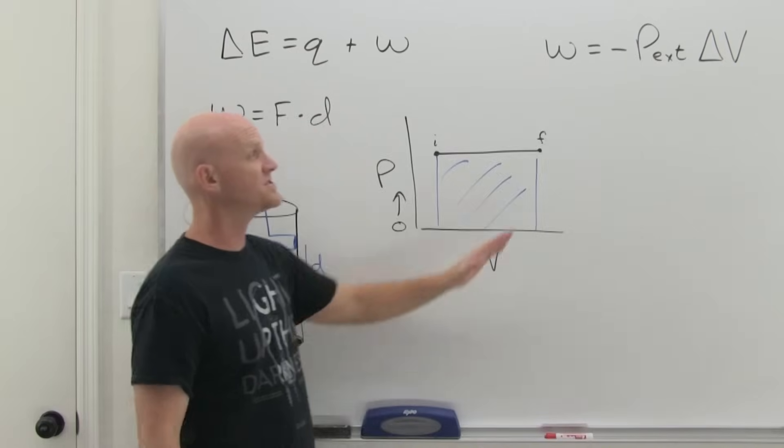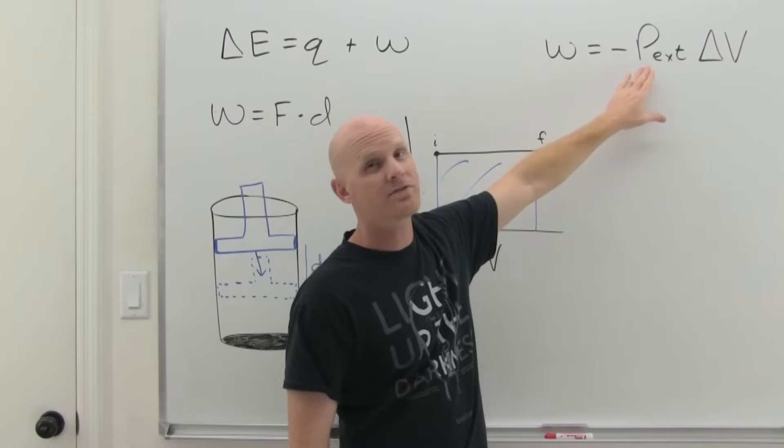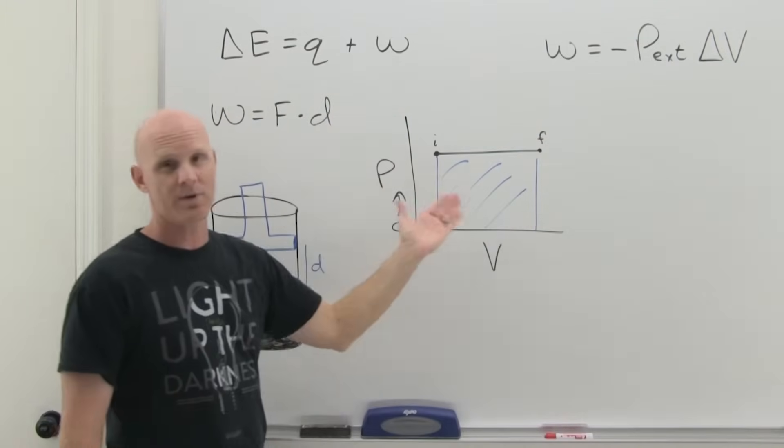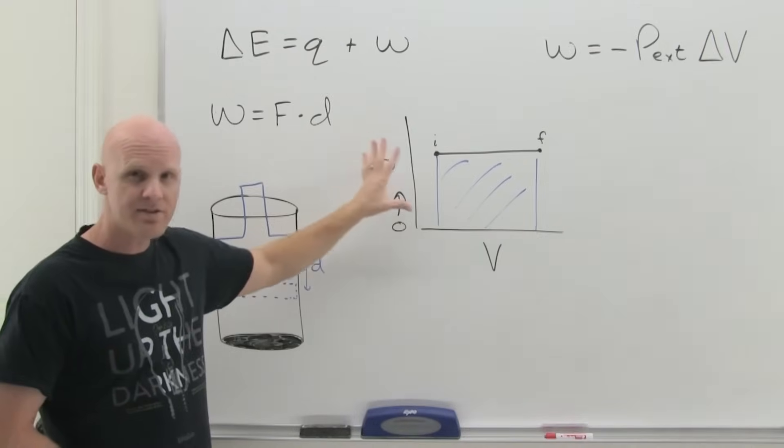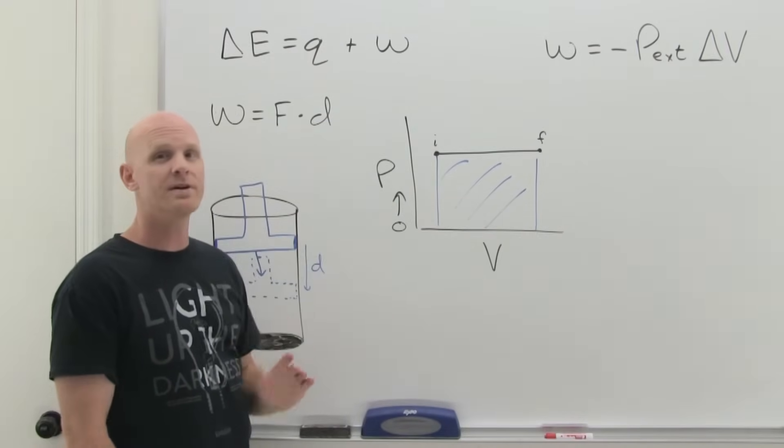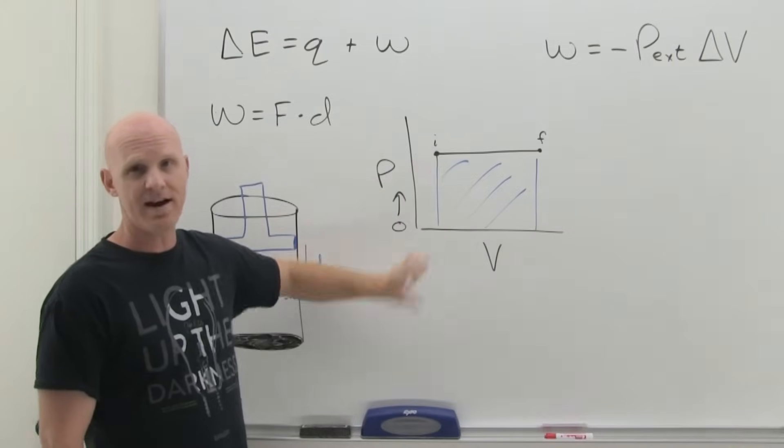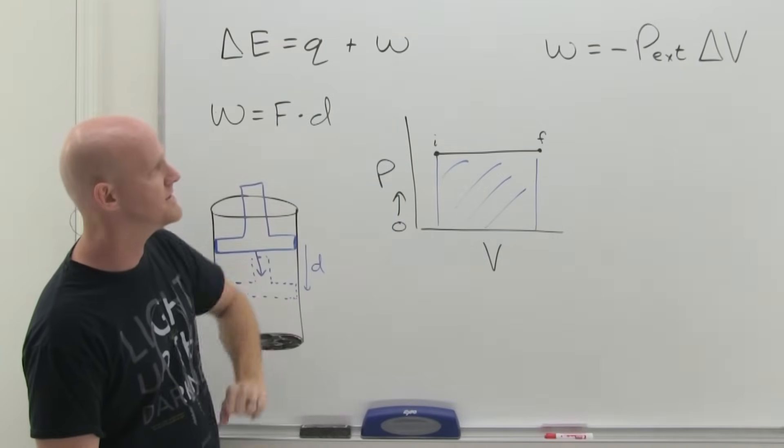However, in a formal calculation, you're probably only going to be dealing with constant external pressure, something that would end up looking like this. So maybe you'll see this graphically, maybe you won't. Maybe you'll have to do some calculations graphically and realize that work is indeed the area under the curve on a PV graph here.